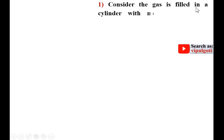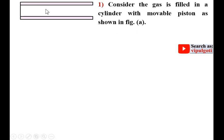Consider the gas filled in a cylinder with a movable piston as shown in figure A. This is the cylinder, this is the piston, and this space is filled with the gas. This is considered as a system, and here we are talking about the isothermal process, that means constant temperature process — so temperature is constant.